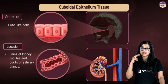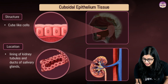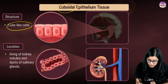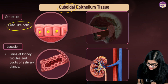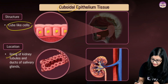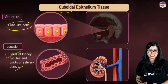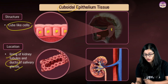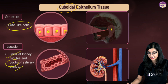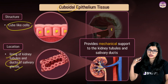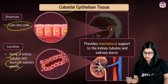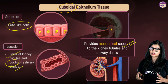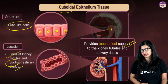The second type is cuboidal epithelium. These cells have a cube-like structure with a prominent nucleus more or less in the center. They are found in the inner linings of kidney tubules and the ducts of the salivary glands — ducts being tubes that connect the salivary glands to the mouth. Their function is protection and mechanical support, especially in the kidney tubules and salivary ducts.